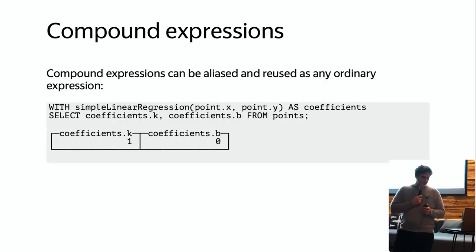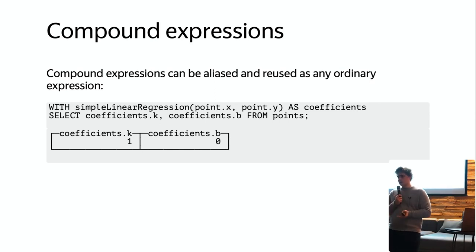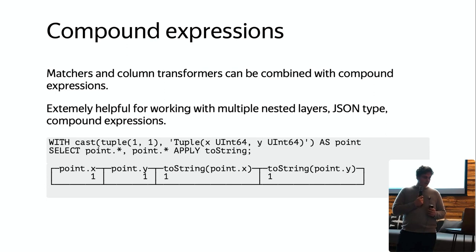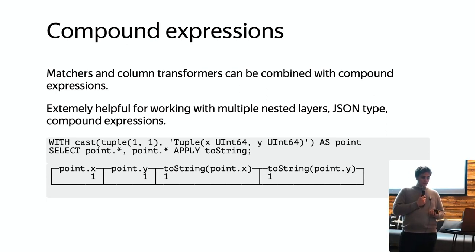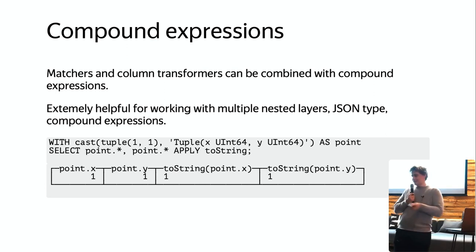Compound expressions can now be aliased and reused as any ordinary expression. For example, simpleLinearRegression returns coefficients `k` and `b`, and you can alias that result and reuse its sub-columns in the main query — very easy and natural. Additionally, matchers and column transformers can now be combined with compound expressions. For example, you can create a compound expression `point` in a WITH statement, use it in SELECT with `*` to extract all columns, and apply a `toString` transformation to all of them.